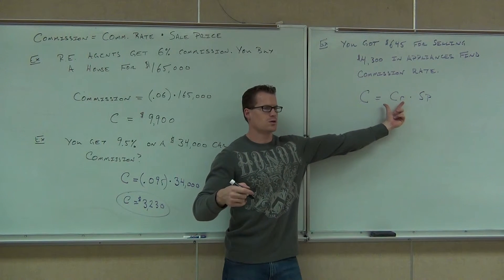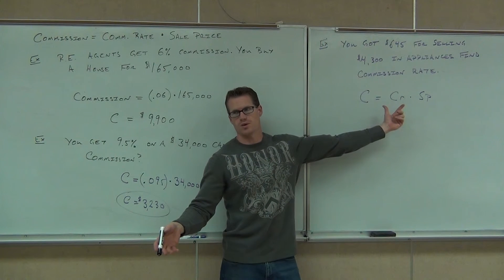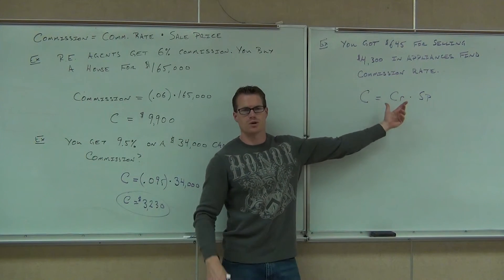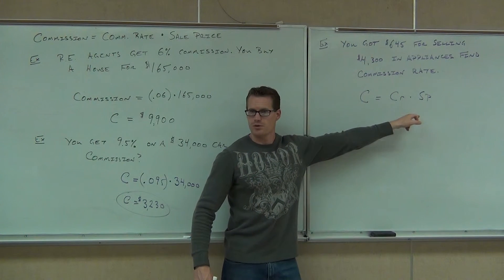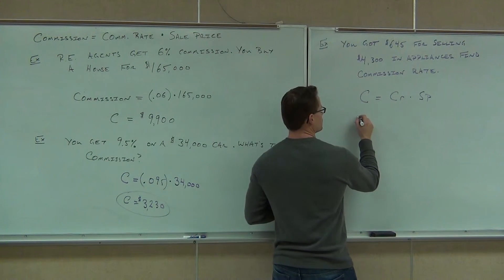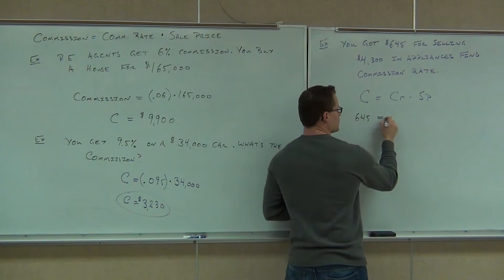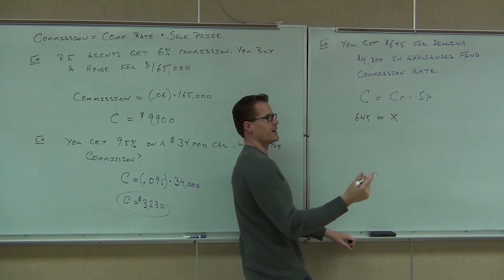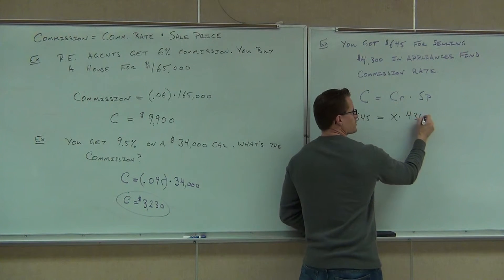Very good. Are you guys okay that the C is $645 here? What's the CR? Commission rate. Do we know that? That's what we're looking for. What's that going to become? Probably X or whatever you want. And then the sale price. Do we know the sale price which you sold? $4,300. So let's fill that stuff out and see if we can solve it. So we have our commission of $645 equals commission rate. We don't know that. But we do know the sale price. You sold $4,300 worth of stuff.